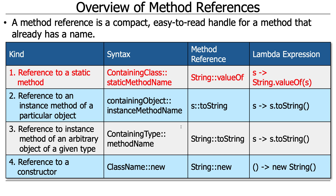One kind of method reference is a reference to a static method. You would have the name of the class, colon colon, then the static method name. For example, String::valueOf. The valueOf is a static method that's part of the String class that will take something and return the value of it. Here's the corresponding lambda expression.